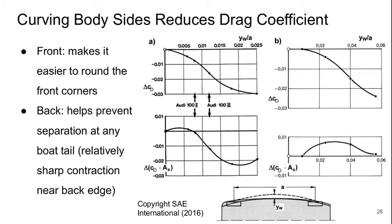Now if we look at the sides of the vehicle — we curve out the body sides — this can again reduce the drag coefficient. The reason is that at the front it makes it easier to round the front corners, and at the back it helps prevent separation at any sort of boat tail, which is a narrowing of the vehicle at the back end in a relatively sharp manner. So we see the drag coefficient goes down when we bow out the sides.